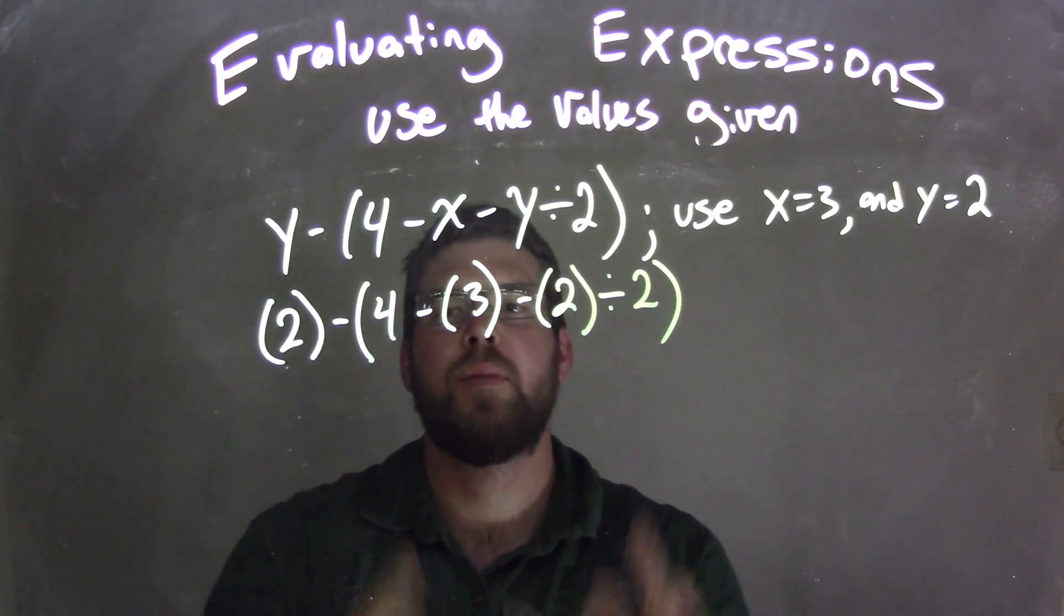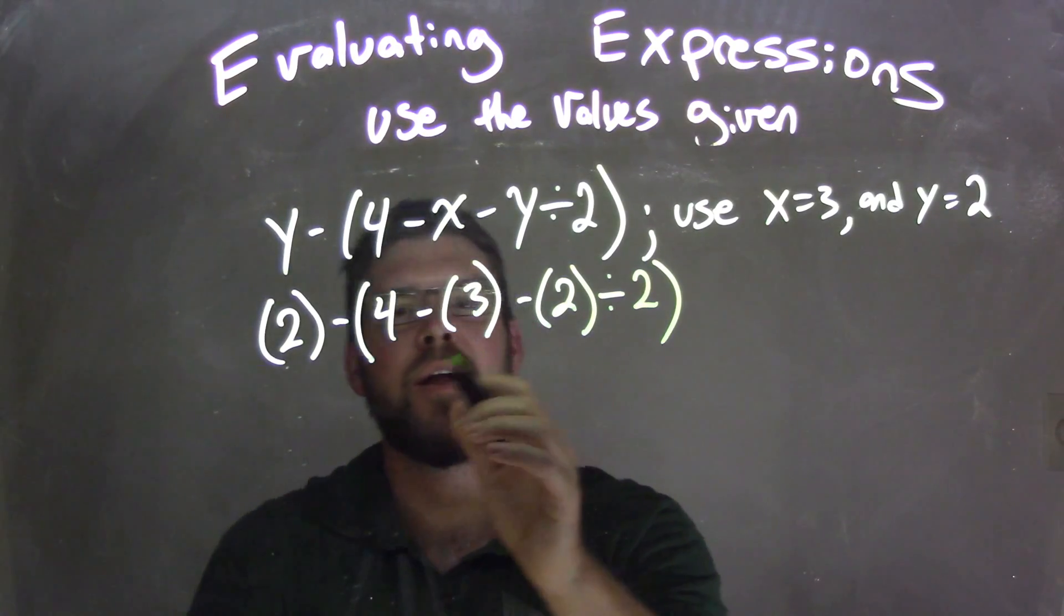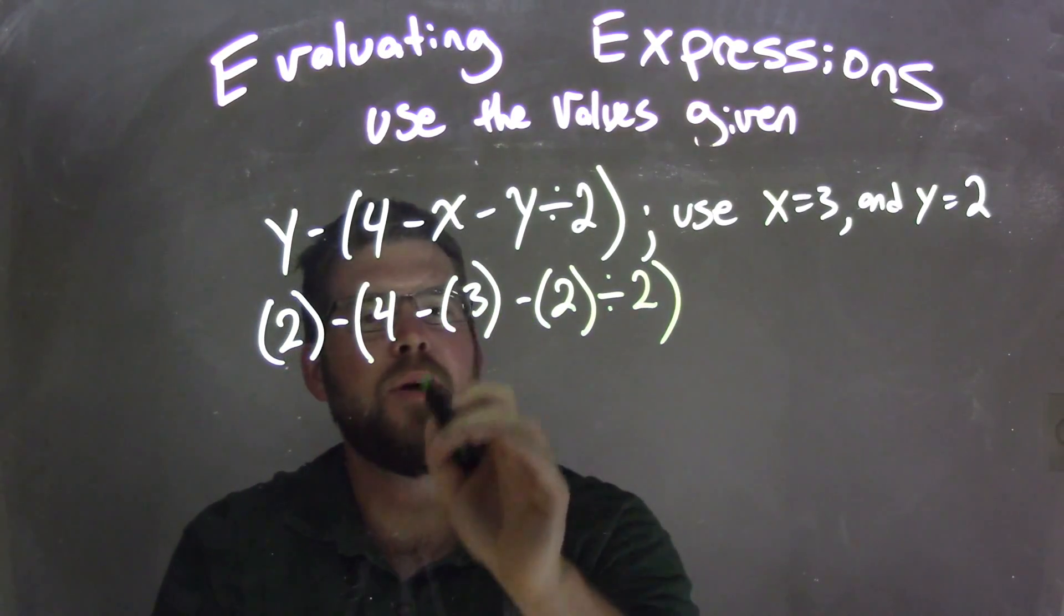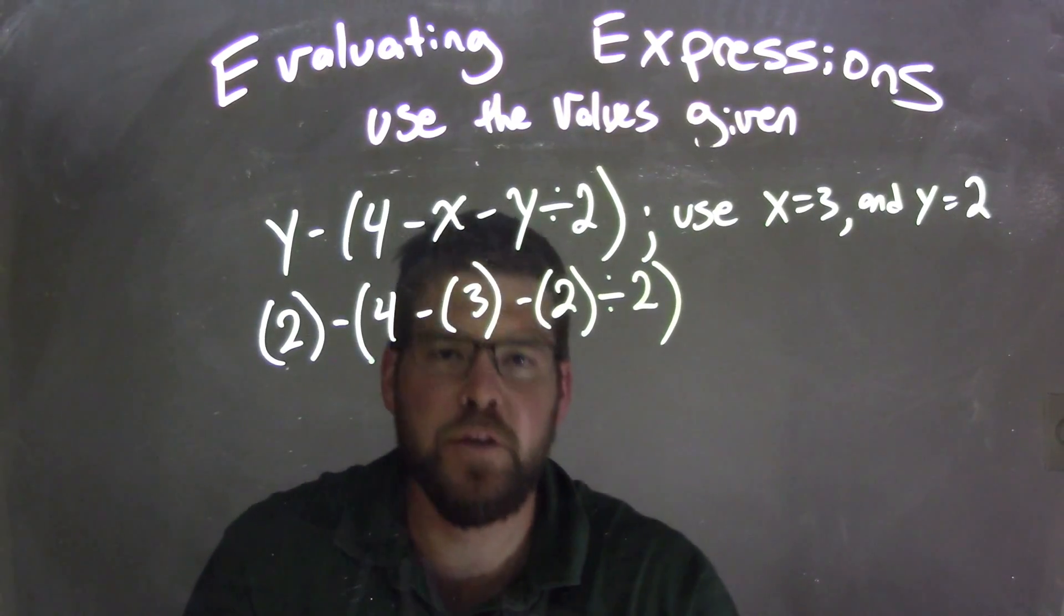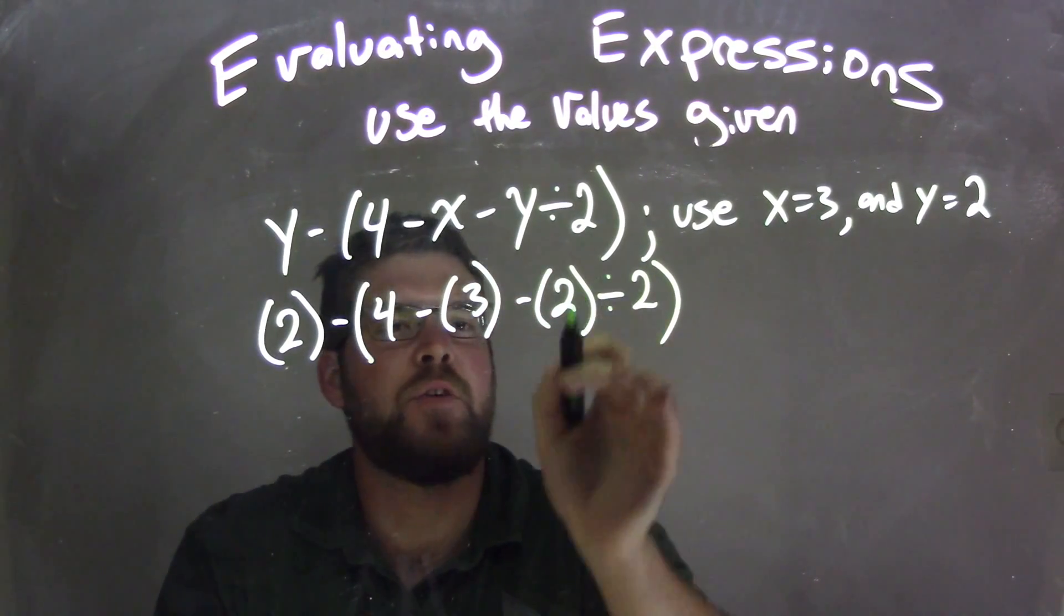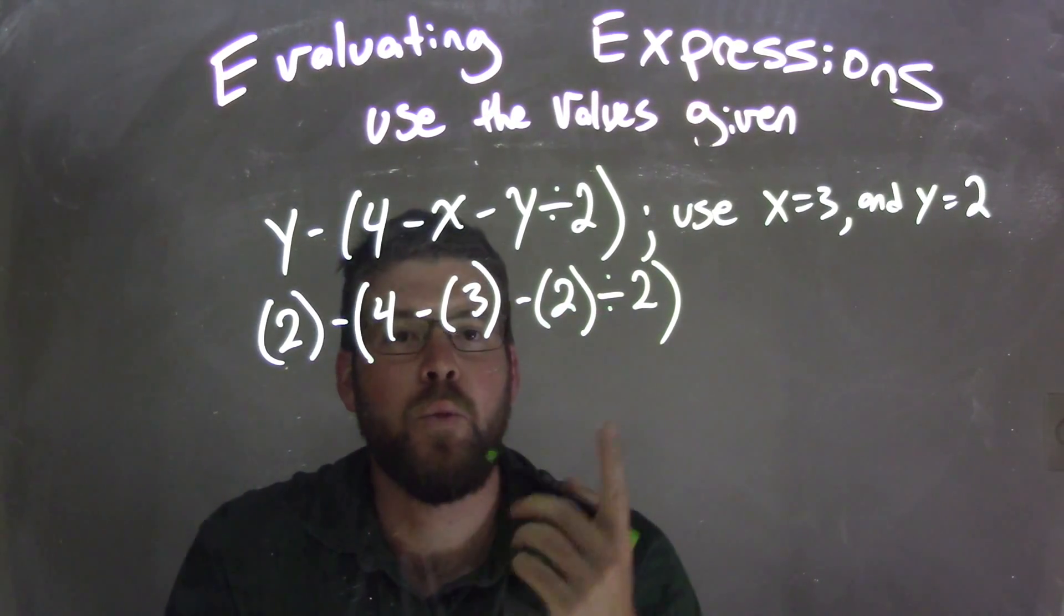So now it's time to simplify. We have the big parentheses here, we need to deal with the inside, and inside, all of our numbers are separated by an operation: subtraction, subtraction, and division. So we need to deal with that division first, 2 divided by 2, which is 1.